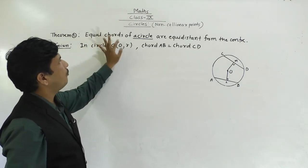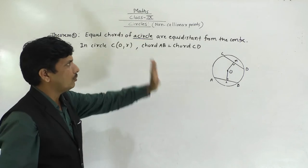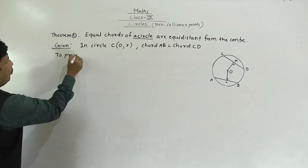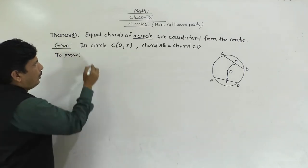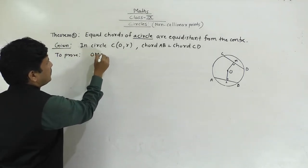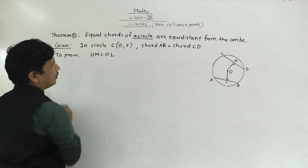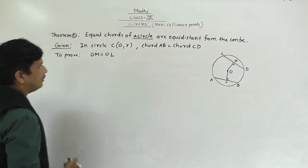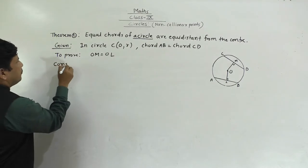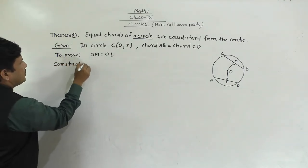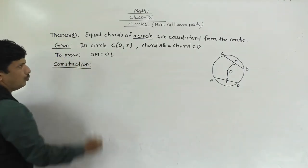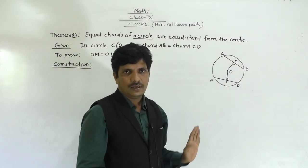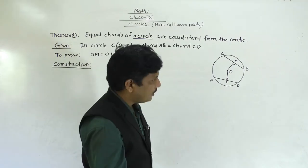Equal chords of a circle are equidistant from the center. We need to prove OM equals OL. This is very easy to prove by converting the problem into triangles. We will join OA and OC — that is our construction — forming two triangles: triangle OLA and triangle OMC.